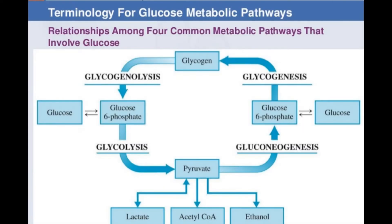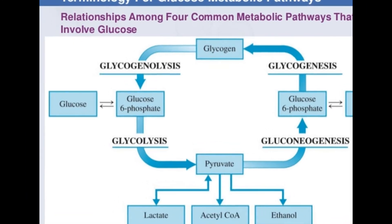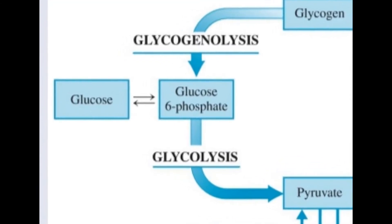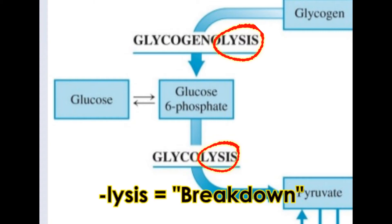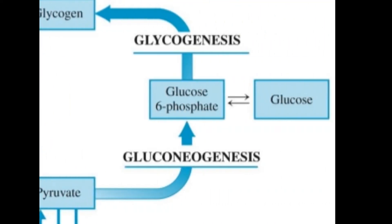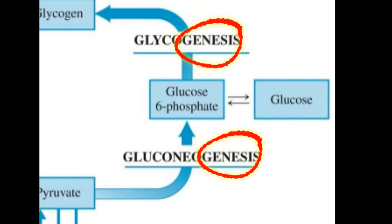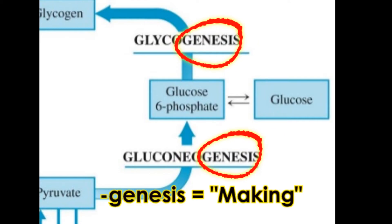First, I am going to show you the relationships among four common metabolic pathways that involve glucose. On the left side, note that the glycogen degradation pathways have names ending in 'lysis' — L-Y-S-I-S — which means breakdown or splitting. And on the right side, the pathways associated with glycogen synthesis have names ending in 'genesis' — G-E-N-E-S-I-S — which means making or formation.